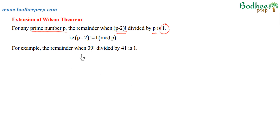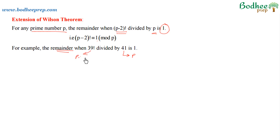For example, if we have to find the remainder when 39! is divided by 41, we can see that if p = 41, then 39 = p-2, so 39! is (p-2)!. By the extension of Wilson's theorem, when (p-2)! is divided by p, the remainder is 1.